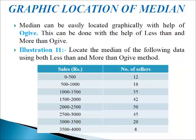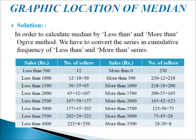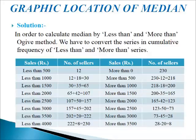Let's understand this with the following illustration. We have to locate the median of the given data using both less than and more than Ogive methods. The data provides sales and number of sellers. To calculate median, we convert the series into cumulative frequency for less than and more than series. In the first two columns, we build the less than Ogive by adding frequencies: 12, then 12 plus 18 equals 30, then 30 plus 35 equals 65, and so on until we reach 230.